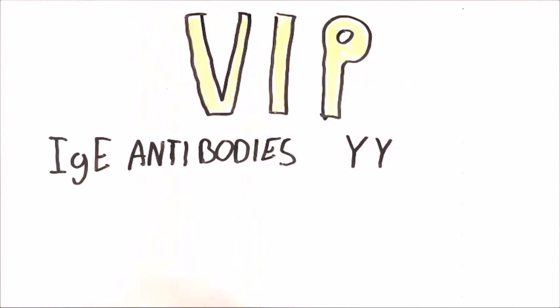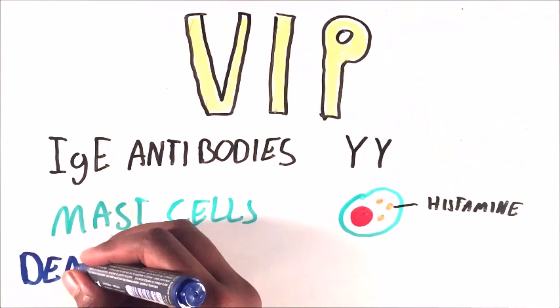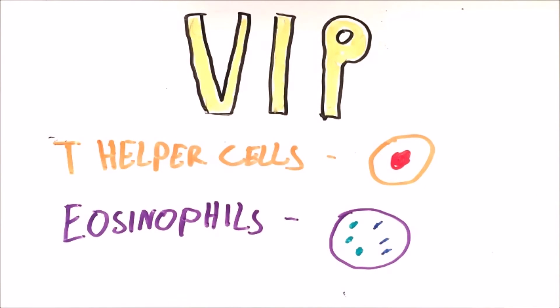Some of these are IgE antibodies, these are able to bind to allergens, mast cells, these contain histamines, dendritic cells, T helper cells and eosinophils.